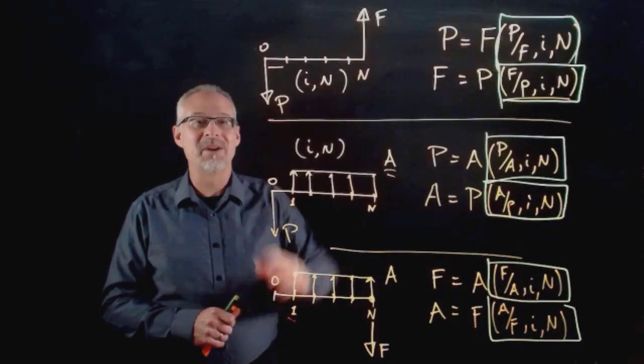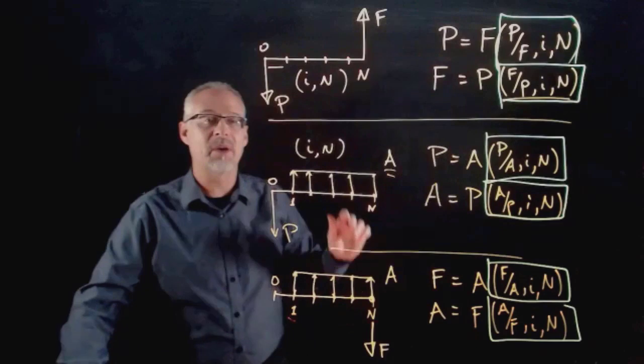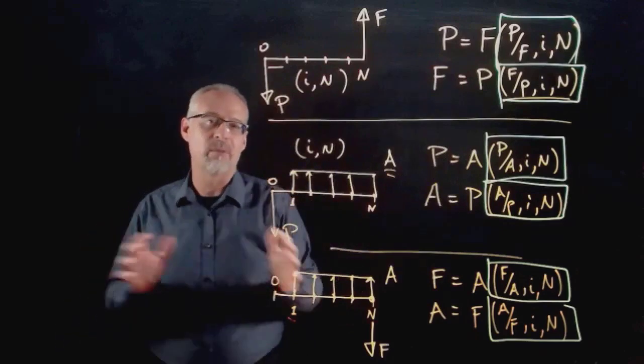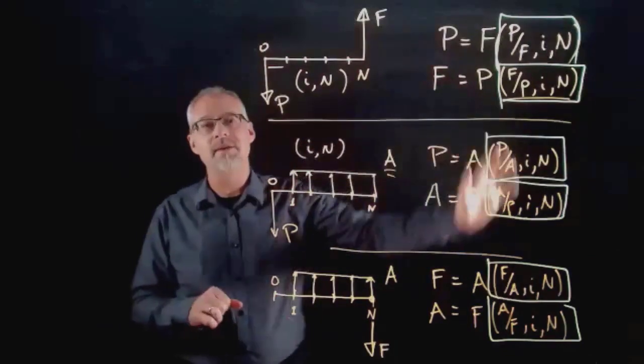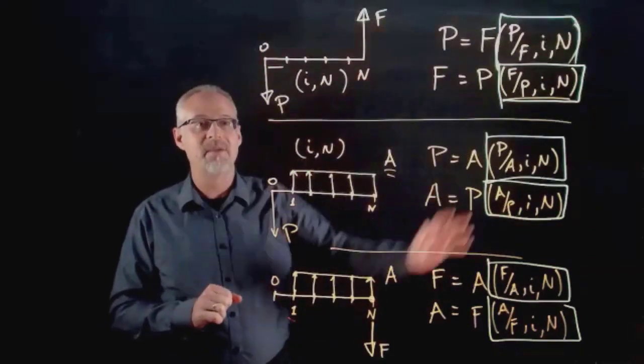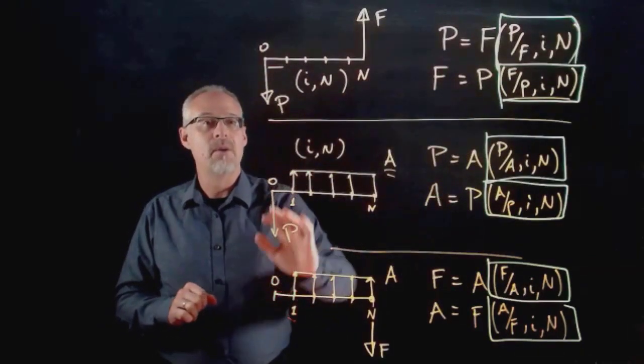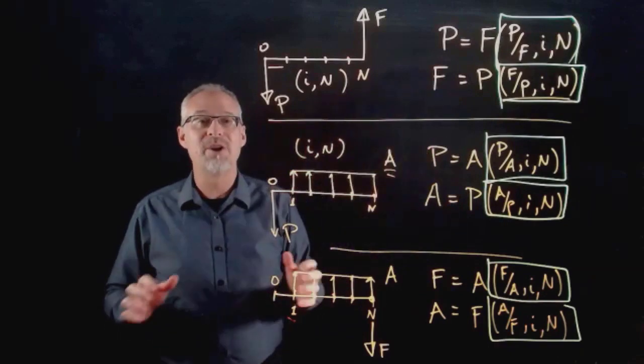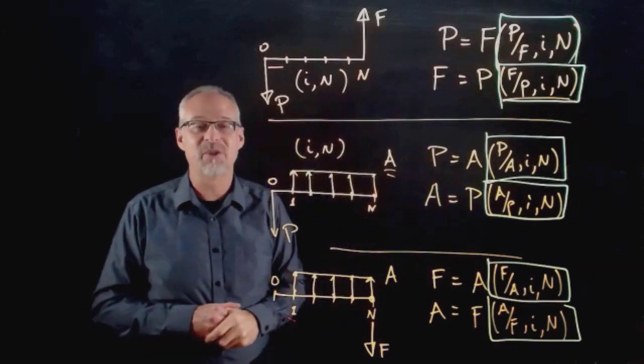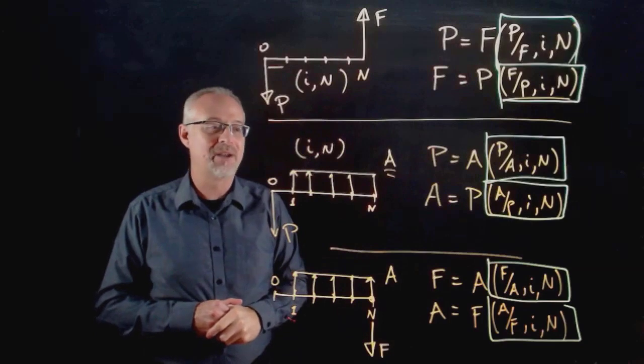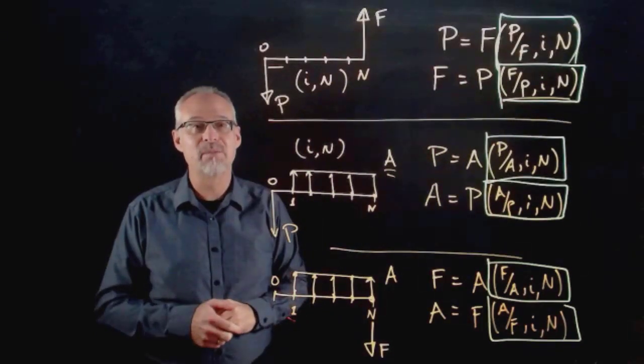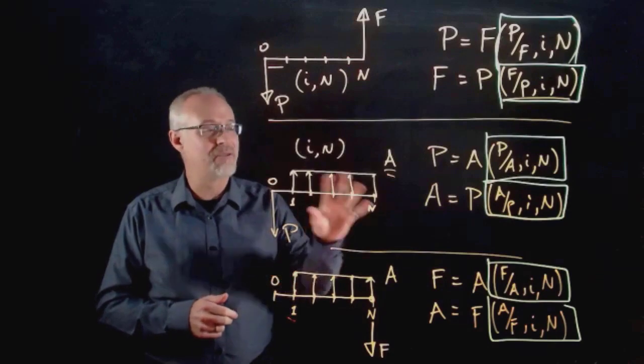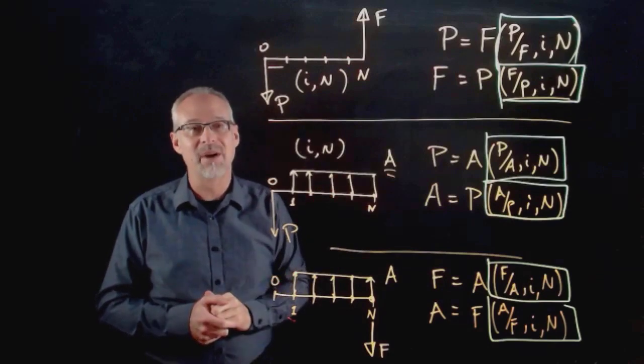It becomes a task of figuring out what value of i or what value of n makes that factor equal a certain amount. This is conceptually what you should come away with from that first half of chapter three. If you get this, then you kind of get most of what you're going to need for most of the rest of the course. It's hard to really understate the importance of these patterns and these time value of money formulas.